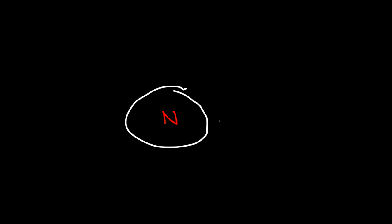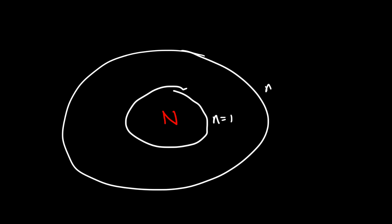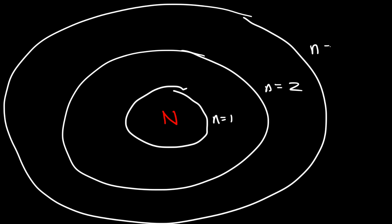An orbital is simply the most probable location to find an electron. Let's say this is the nucleus. We're going to consider the Bohr model of the atom, so I'm going to draw circular orbits. This is going to be the first energy level, n equals 1, and here we have the second energy level, n equals 2, and here's the third energy level, n equals 3.